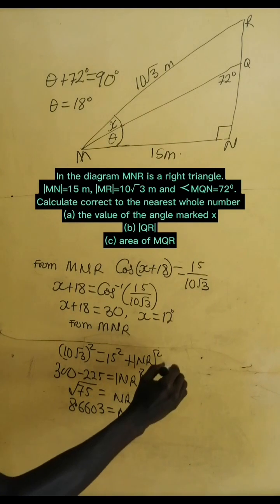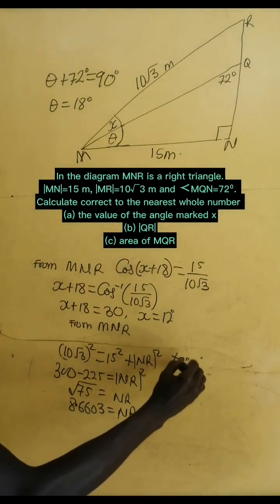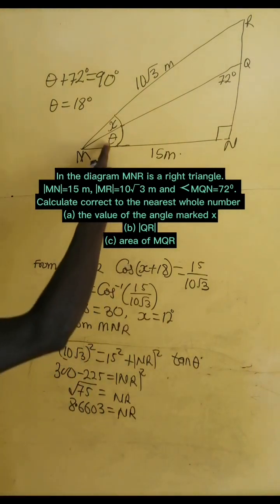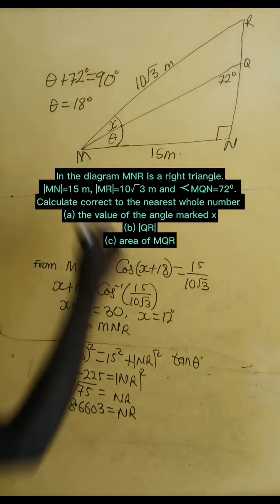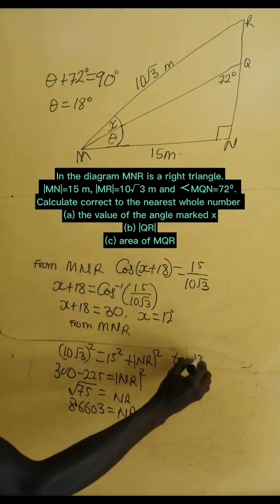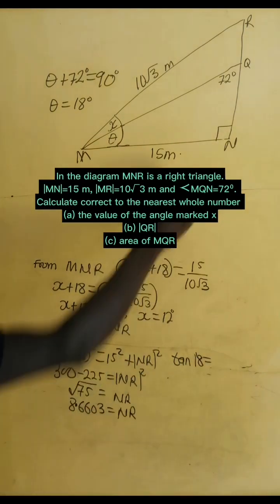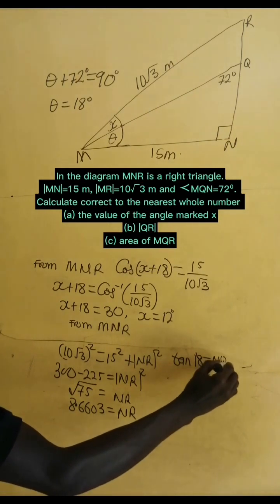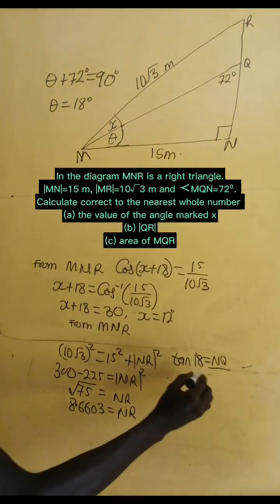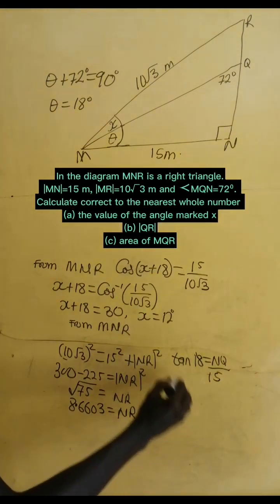Now, if we consider this triangle and take tangent of theta, and theta there is 18 degrees. So, let's take tangent of 18 degrees. This one will give us the opposite NQ divided by the adjacent, 15.